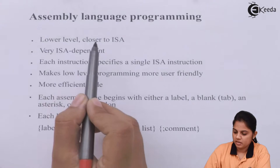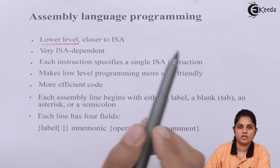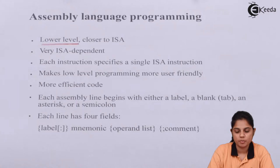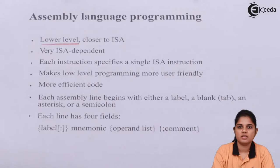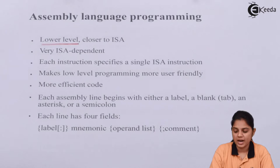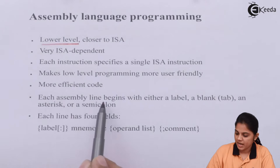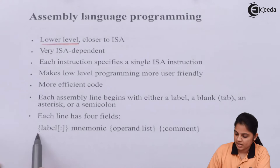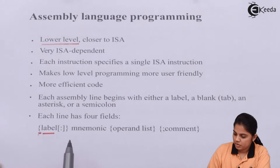It is a low level language where each instruction specifies a single ISA instruction. Every line consists of an instruction that can be executed by the processor. It makes low level programming more user friendly so the user can understand the language, and that language can be converted into a format that the processor will also understand. It has more efficient code. Each assembly line begins with either a label, a blank tab, an asterisk, or a semicolon — so it follows a specific pattern in which the language should be written.